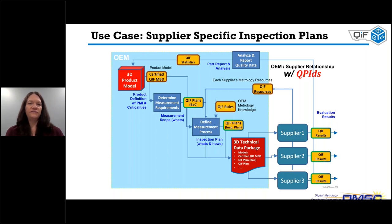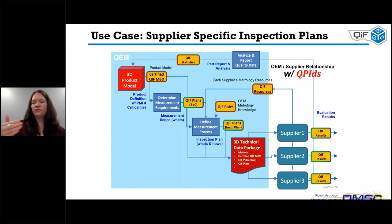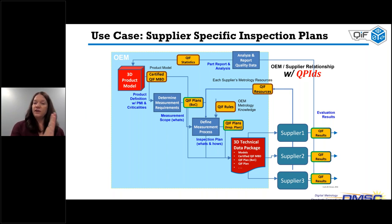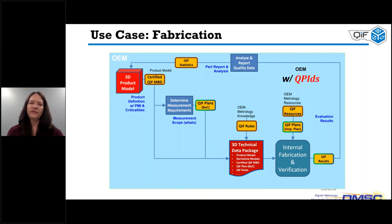The next use case is a supplier-specific inspection plan. Here, the OEM provides the supplier with the QIF model, the QIF plan, and also the QIF rules. When we add in the rules passed off to the supplier, it gives the OEM more control than the prior use case. Some engineering organizations want complete control and include these rules; some do not — it depends on how your operation works. But the framework works the same for both scenarios.